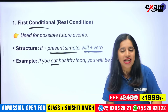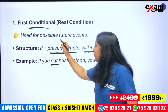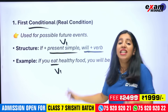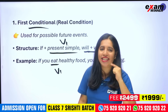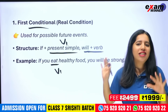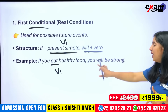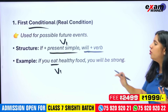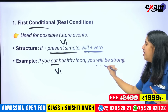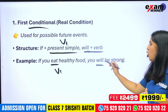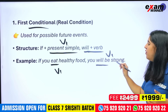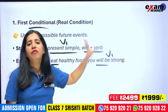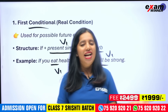In the if-part, 'eat' should be V1 — simple present. If you eat healthy food — 'eat' is V1, simple present. That is a clear condition. The result is: you will be strong. The verb in the main part is 'will be' — 'be' is V1 form.